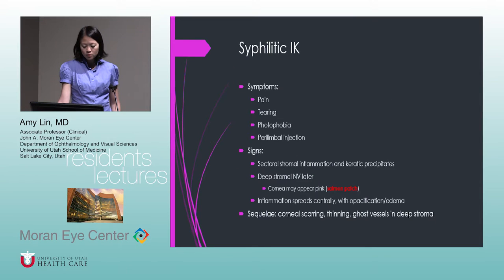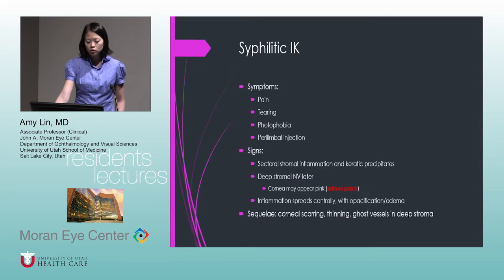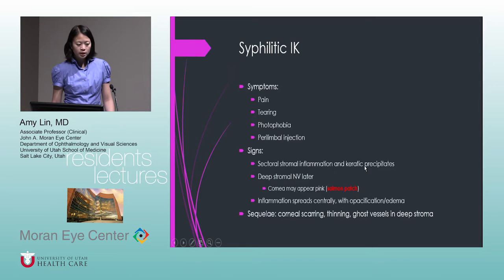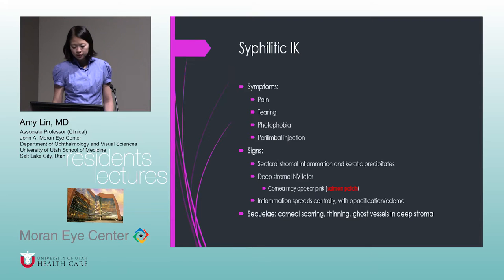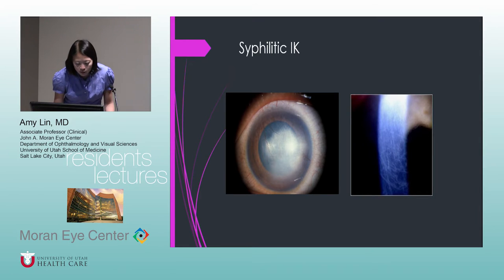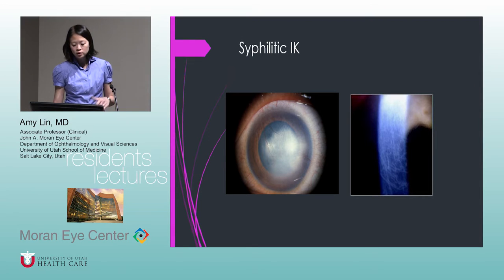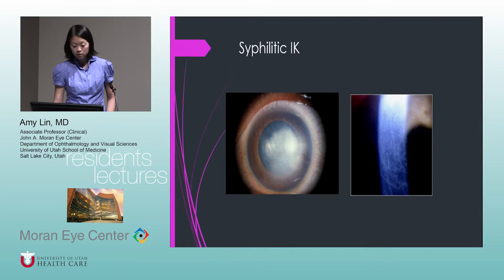Congenital syphilis produces bilateral stromal keratitis lasting several weeks. With acquired syphilis, interstitial keratitis rarely develops, but if it does it's typically unilateral. Symptoms: pain, tearing, photophobia, perilimbal injection, sectoral stromal inflammation, and KPs. Deep stromal neovascularization is seen later in the course. The cornea may appear pink — termed the 'salmon patch,' a buzzword for tests. Inflammation spreads centrally with opacification and edema, and sequelae include corneal scarring, thinning, and ghost vessels in the deep stroma.